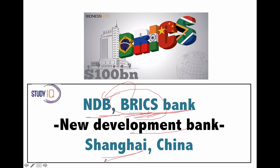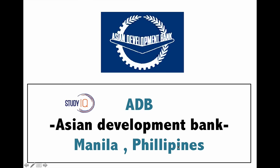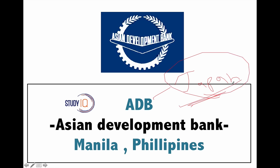Next is ADB — the Asian Development Bank. It is a Japan-dominated bank because Japan holds the maximum share in ADB. Its headquarter is in Manila, the capital of the Philippines.